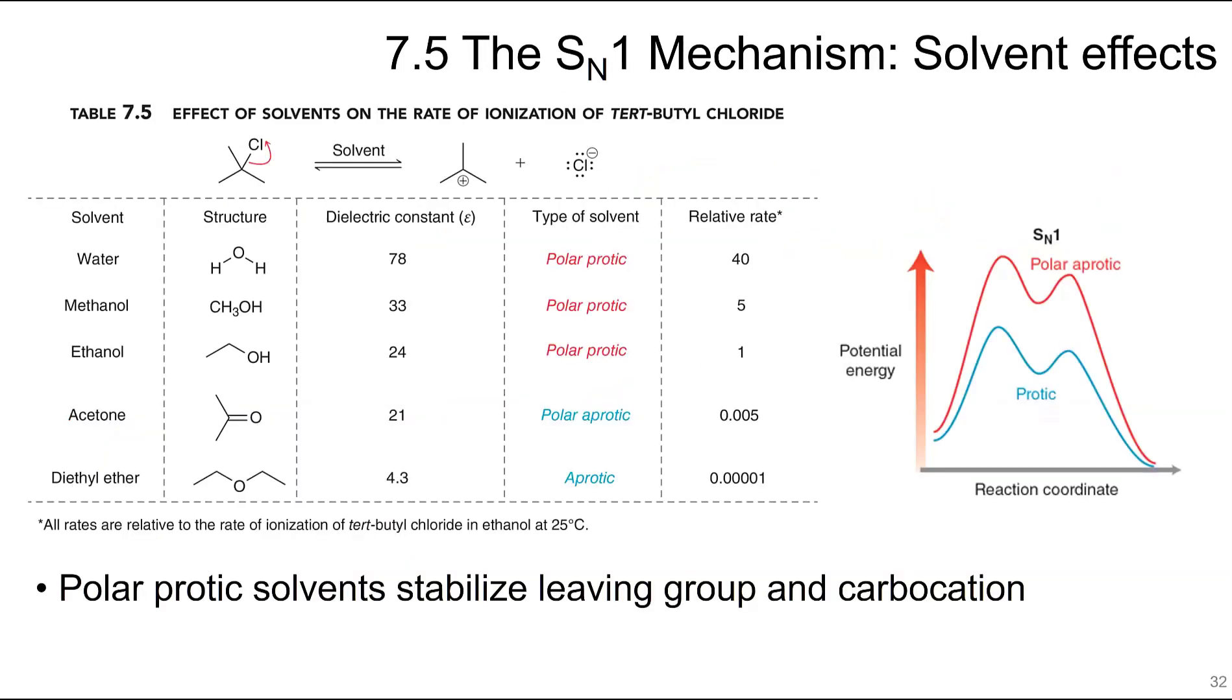For solvent effects, in an SN1 reaction, you want a polar protic solvent. That will stabilize the leaving group and the carbocation. So in polar protic solvents, the reactions occur much more quickly versus the polar aprotic solvents here. Polar aprotic solvents have much higher energies. Polar protic is lower because it can stabilize both of them.